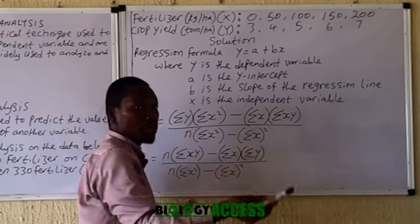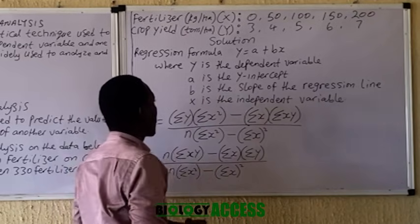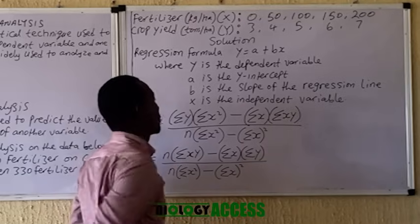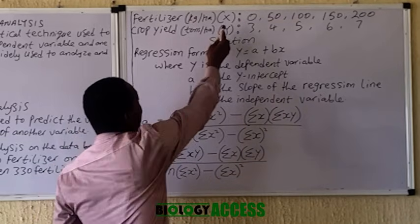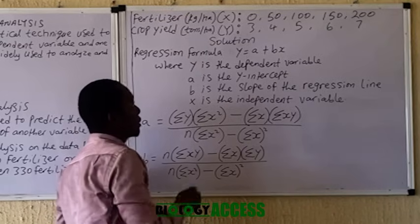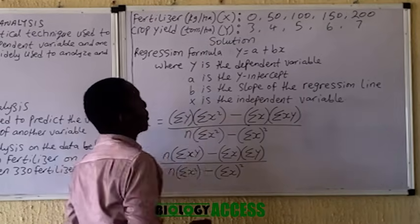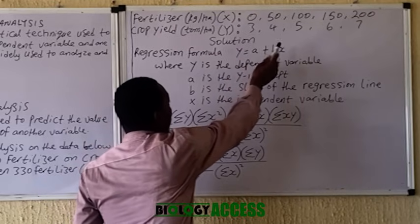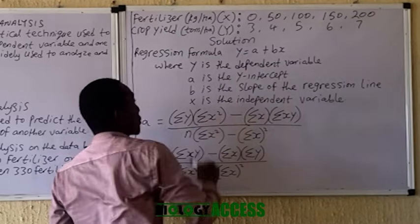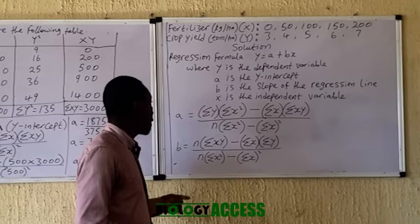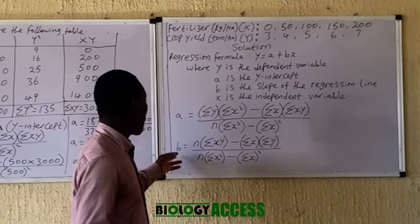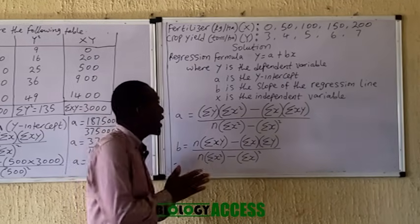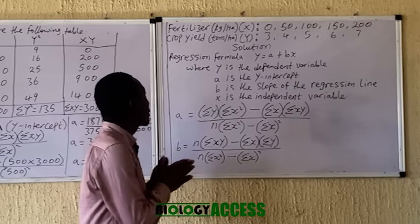The regression formula is Y = a + bX, where Y is the dependent variable, a is the y-intercept, b is the slope of the regression line, and X is the independent variable. Since X and Y are given in the question, you need to find a and b so you can use this equation to predict the outcome for any given value of X. Note that there are different methods and formulas for regression analysis, but I chose this method because it is direct and easy.